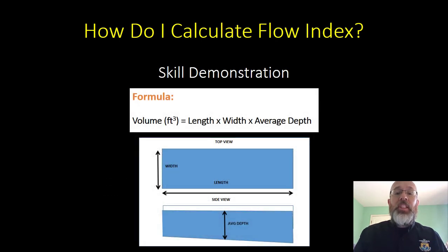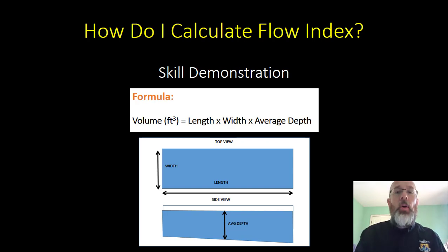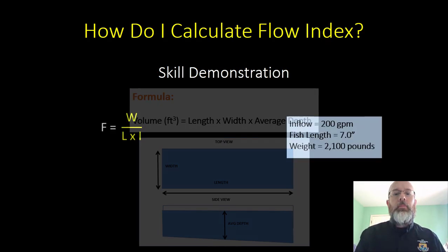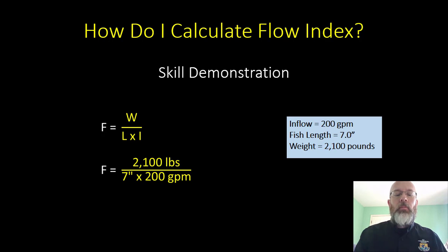Unlike density index, we're not interested in the volume of the rearing unit here — that had to do with how much space you needed. We're interested in how much water is coming in. The inflow was 200 gallons per minute, fish length was 7 inches, and the weight was 2,100 pounds. We plug that information into our equation — F equals W over L times I — and we get a flow index of 1.5.